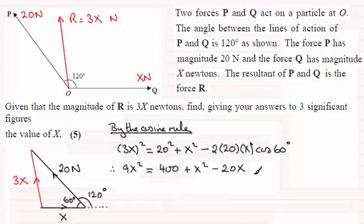What we've got here is a quadratic equation, so I need to rearrange this, make it equal to 0. So what I'm going to do is take the X squared from both sides, so you've got 9X squared minus X squared is 8X squared. Then we've got to add 20X to both sides, so that's plus 20X, and subtract the 400 and that will equal 0.